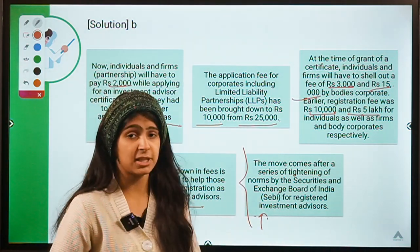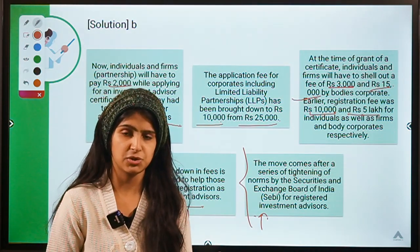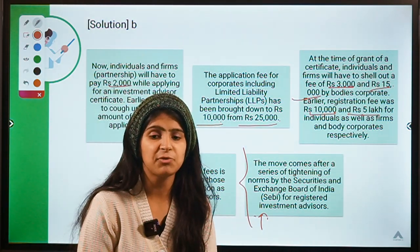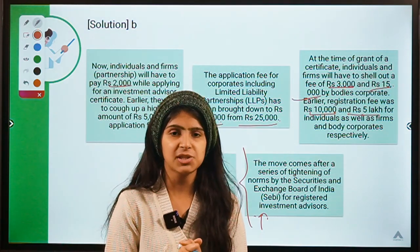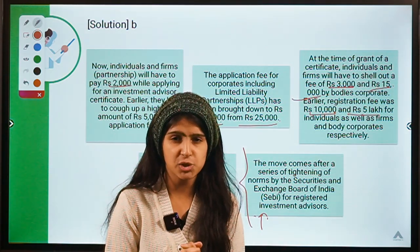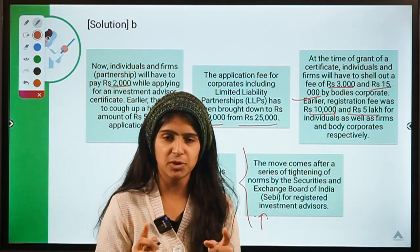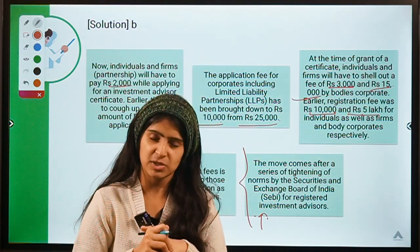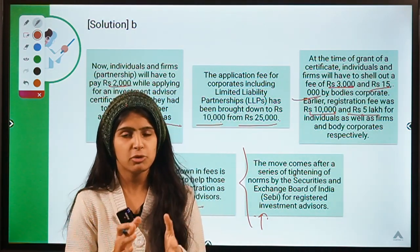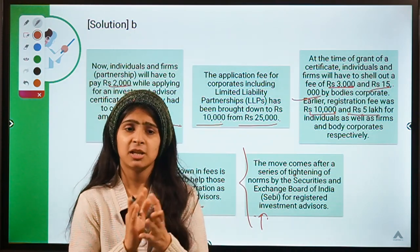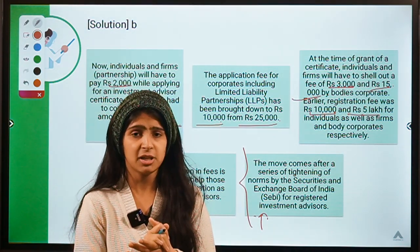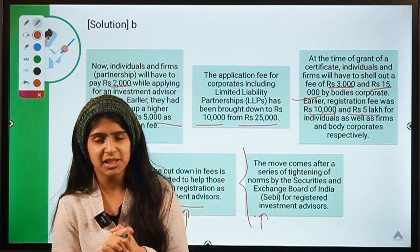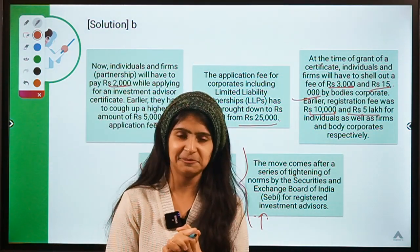If you remember, in these sessions we have discussed how for investment advisors the regulators have been getting stricter, trying to separate the advisory and distribution functions of investment advising. This fee reduction is one step in that same direction. Earlier they also increased the qualifications required for becoming a registered investment advisor. These were the five questions for today. I hope you learned something new — do not forget to hit the like button. Keep carrying on your studies, and I'll see you in the next session. Thank you for being here.